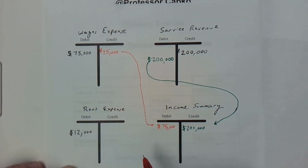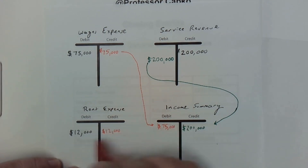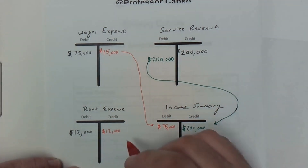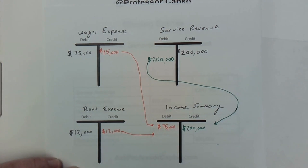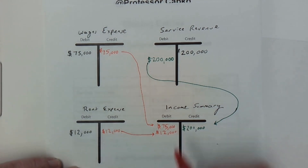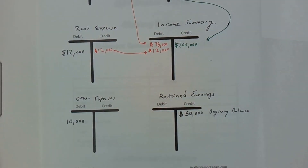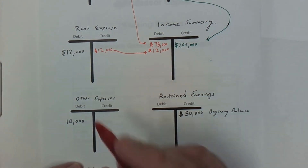Likewise, I need to close out the rent expense. Since I've got a debit balance of $12,000, I'm going to credit $12,000 to rent expense — that zeroes this account out. We zero them out so they're ready to start again with the next accounting period; the new year starts and our temporary accounts are zeroed out so we can see how much we earned in that year. So since I've credited rent expense for $12,000, I'm going to debit income summary for $12,000. As I mentioned, when you're doing this for real you'll probably have many more expense accounts, but I'm just doing three so you see how it works.